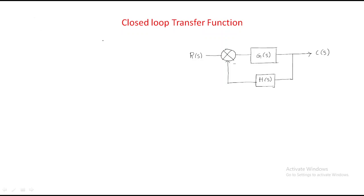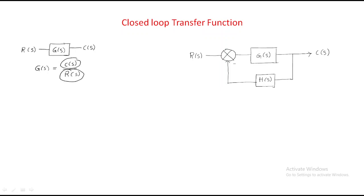Hello everyone. In this session we will discuss the closed-loop transfer function. In the last session we discussed the open-loop transfer function, where we give some input to the system and get some output. The transfer function is written as G(s) = C(s)/R(s), that is, the Laplace transform of output by Laplace transform of input.